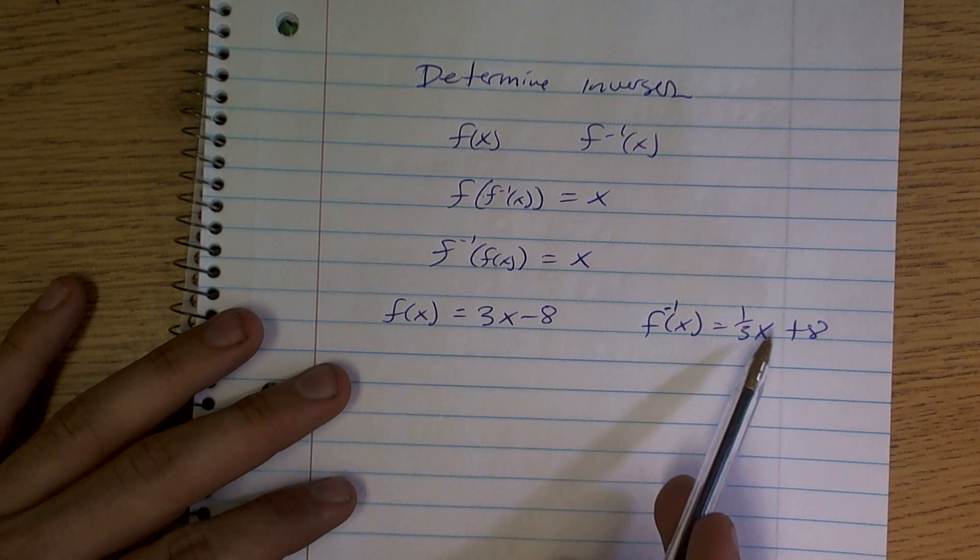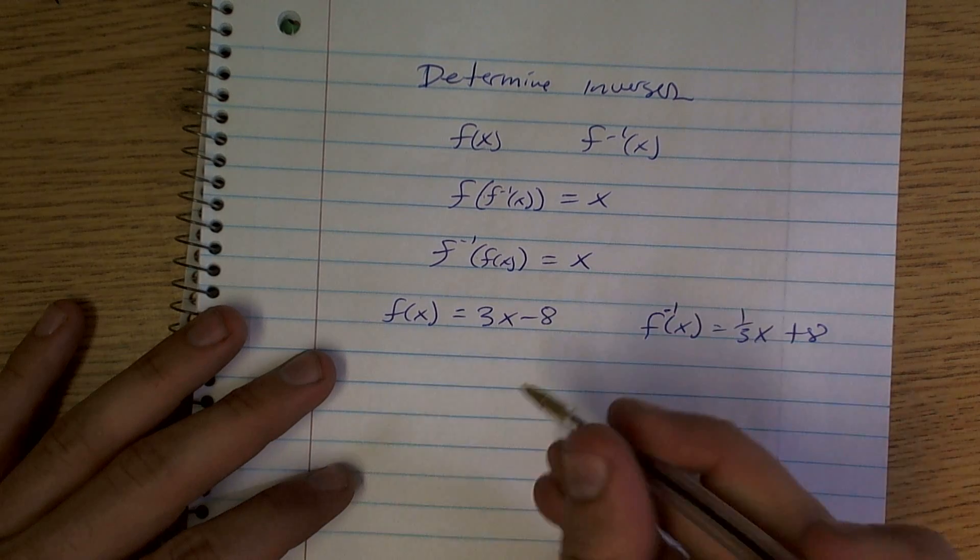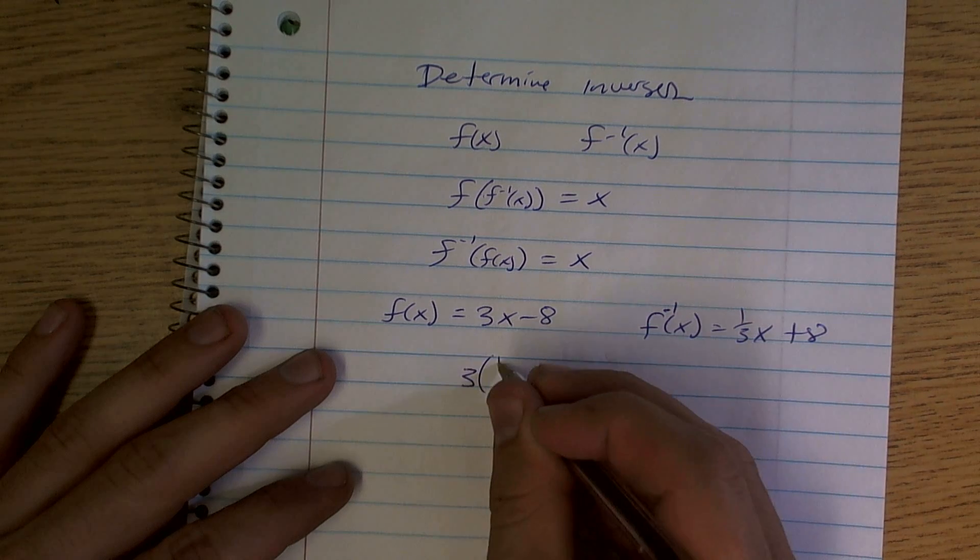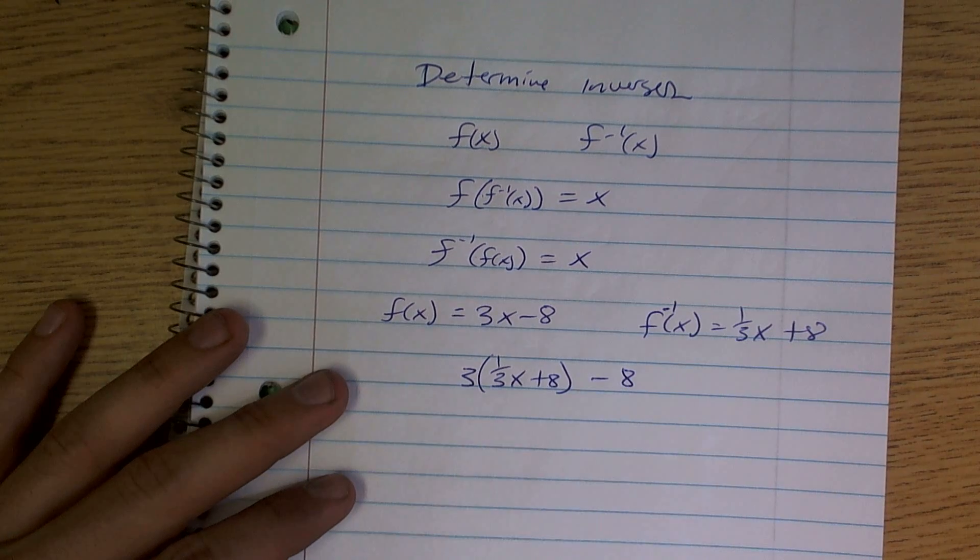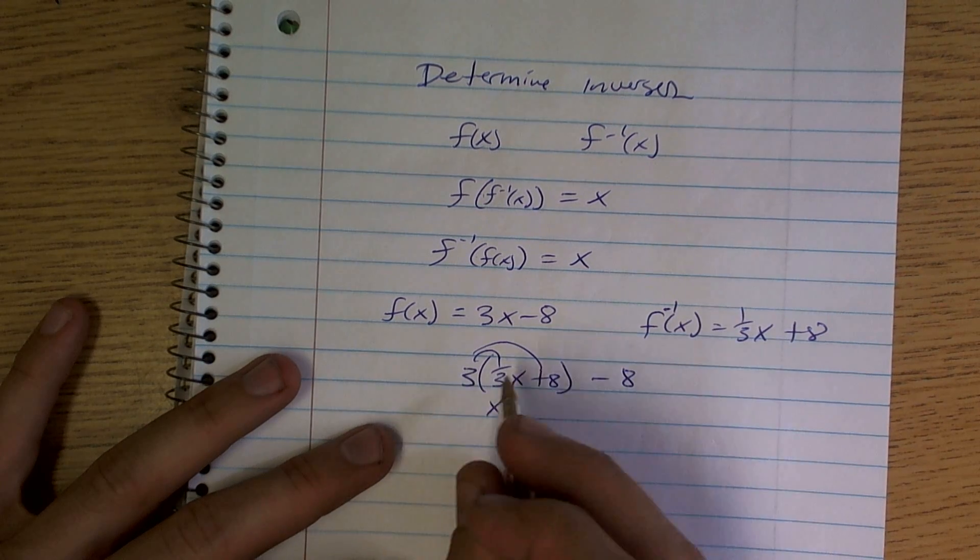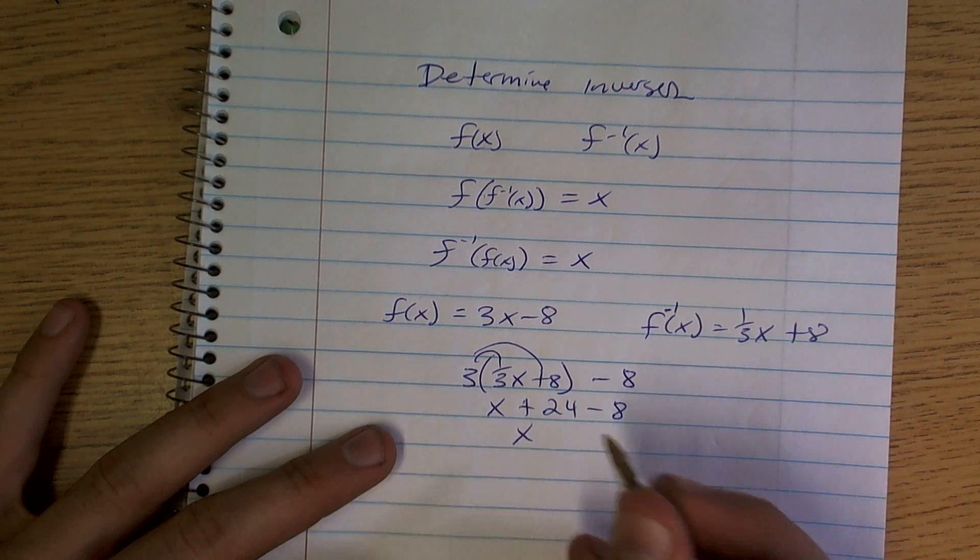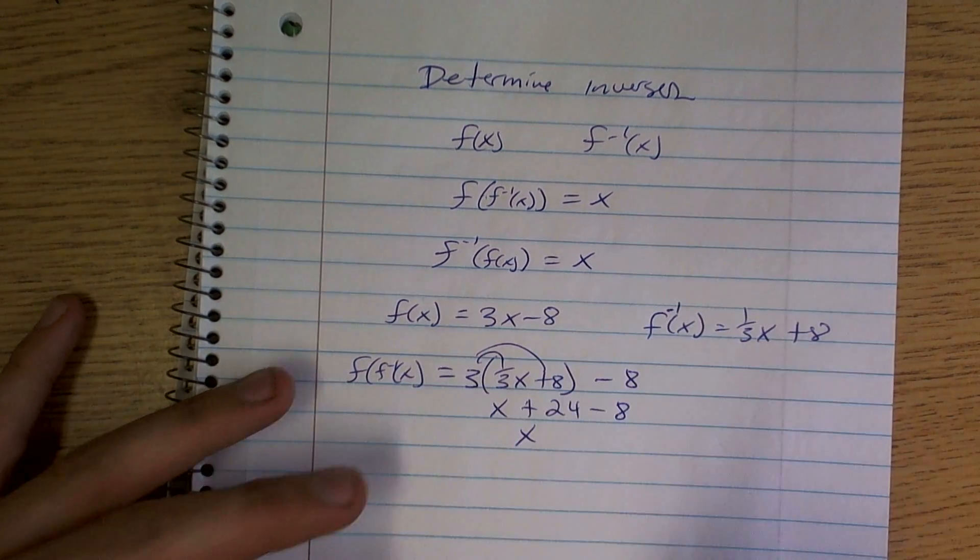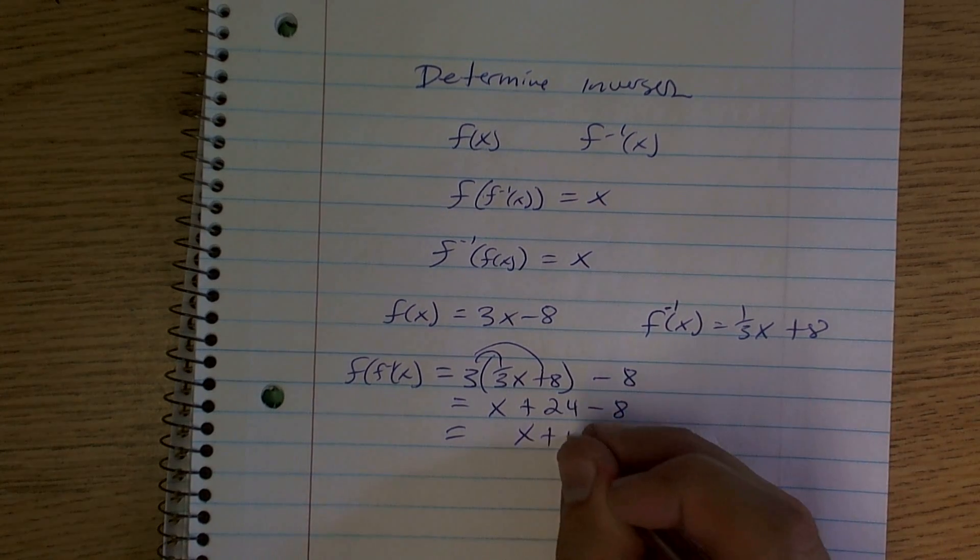So what I can do is I can plug my inverse into my f of x, and once I simplify them, I'll get x out. So I'll do three, and rather than x, I can now write in one third x plus eight minus eight. Okay, so now I use distributive property, and what I get is three times one third is going to be x, three times eight is going to give me 24 minus eight. So let's just do f of f inverse of x equals that. So when I go through, I get 24 minus eight is going to be x plus 16.